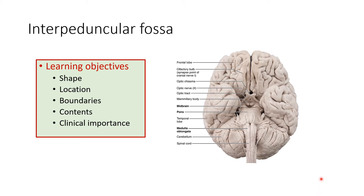This is the inferior surface of the brain where you can identify the frontal lobes, the temporal lobes and the occipital lobes which are covered by the cerebellum, the brainstem of which you are seeing the medulla, the pons, and then the parts of the midbrain — that is the crus cerebri or cerebral peduncles. In relation with the frontal lobe you are seeing the olfactory bulb, olfactory tract, which is dividing into two forming a triangular area known as the olfactory trigone.